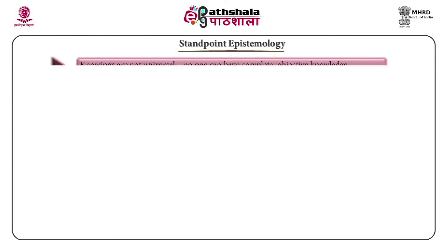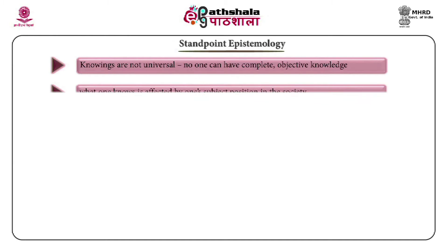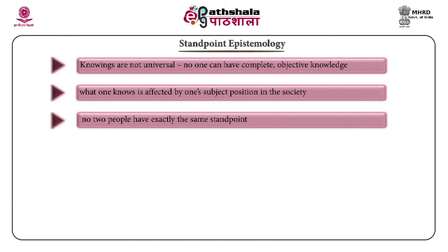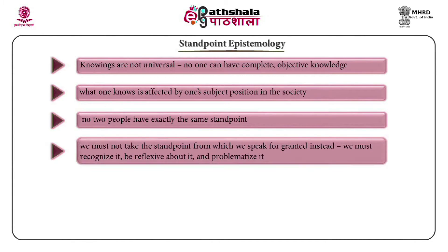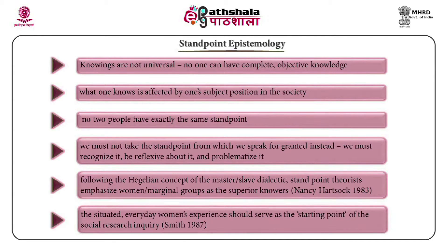Standpoint epistemology holds that knowings are not universal and no one can have complete objective knowledge. What one knows is affected by one's subject position in society, and no two people have exactly the same standpoint. We must not take the standpoint from which we speak for granted — instead we must recognize it, be reflexive about it and problematize it. Following the Hegelian concept of master-slave dialectic, standpoint theorists emphasize women or marginal groups as the superior knowers. The situated, everyday women's experience should serve as the starting point of social science inquiry.